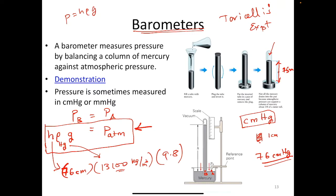Another commonly used unit is mmHg — millimeters of mercury — which is the pressure due to a one-millimeter column of mercury. You convert it to pascals the same way: set h to one millimeter, use the density of mercury, and multiply by g = 9.8. These are two additional units used to measure pressure.